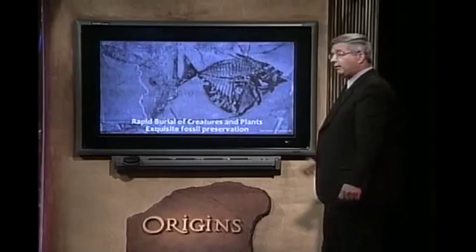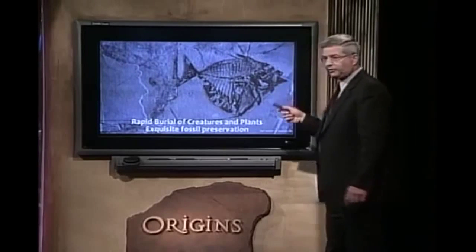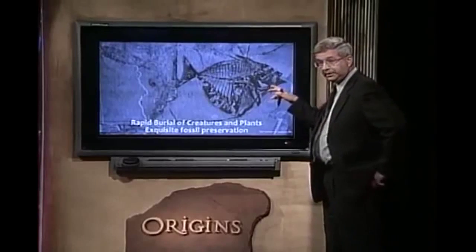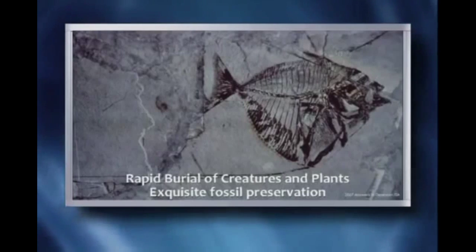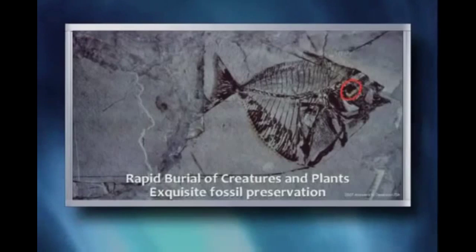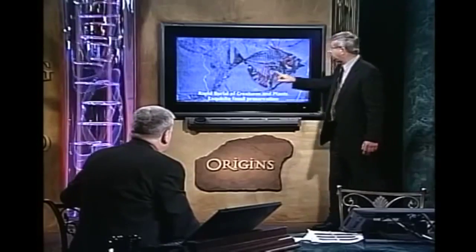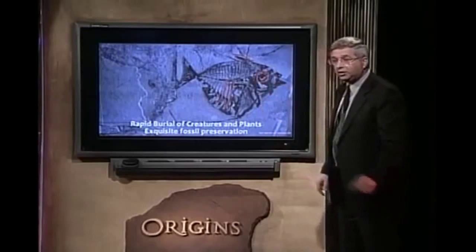Now, rapid burial of plants and creatures. Look at this fossil fish. Ask yourself: are all the dead fish on the bottom of the ocean being fossilized today? If the present is the key to the past, we ought to be able to see fish being fossilized today — but we're not making any fossils today. When a fish dies, it either floats, rots, or is eaten by scavengers. Look at the eye socket, the ribs, the details — the tail, how fine it is. To produce a fossil fish like this, you'd basically have to back up a concrete wagon and dump the concrete on top of it. Something has to happen very quickly.